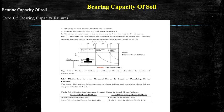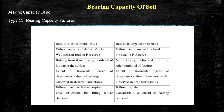Punching shear failure is seen in loose and soft soil at deeper elevations. Its characteristics are: this type of failure occurs in soil of very high compressibility; bulging of soil around the footing is absent; failure is characterized by very large settlement; and continuous settlement with no increase in load P is observed.